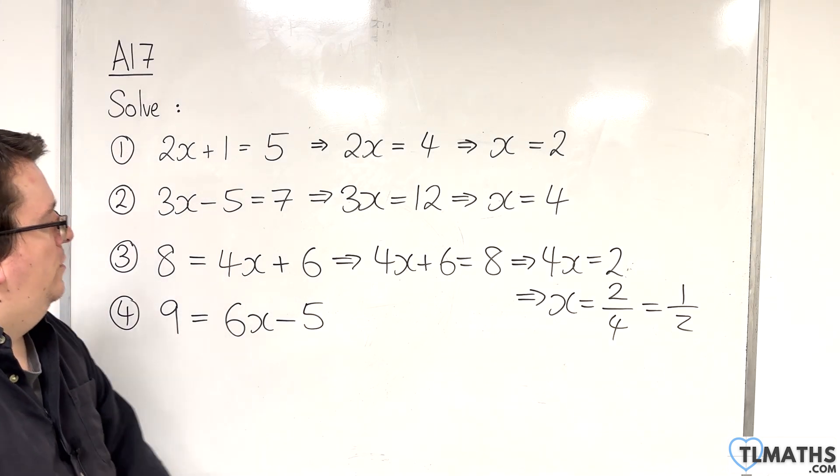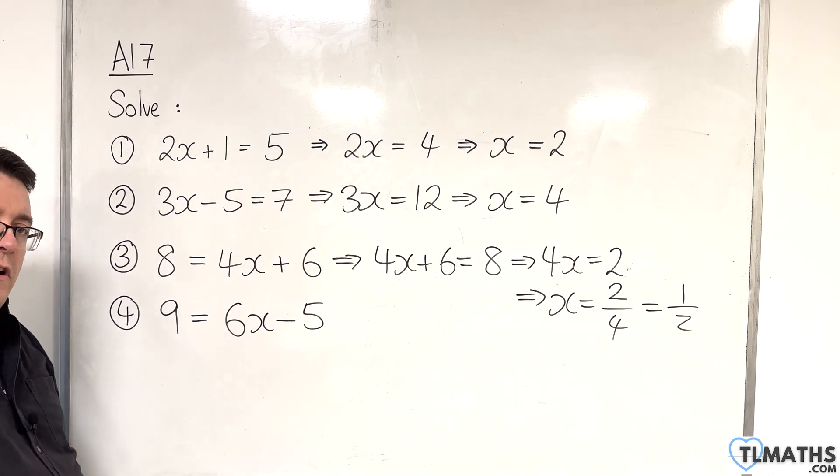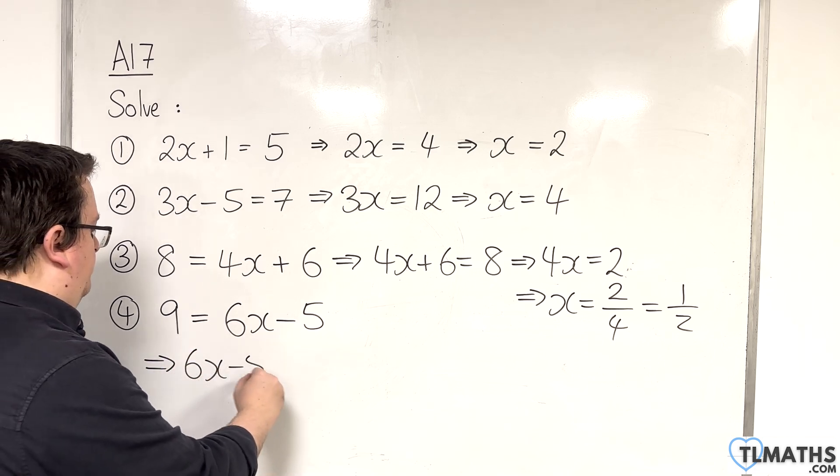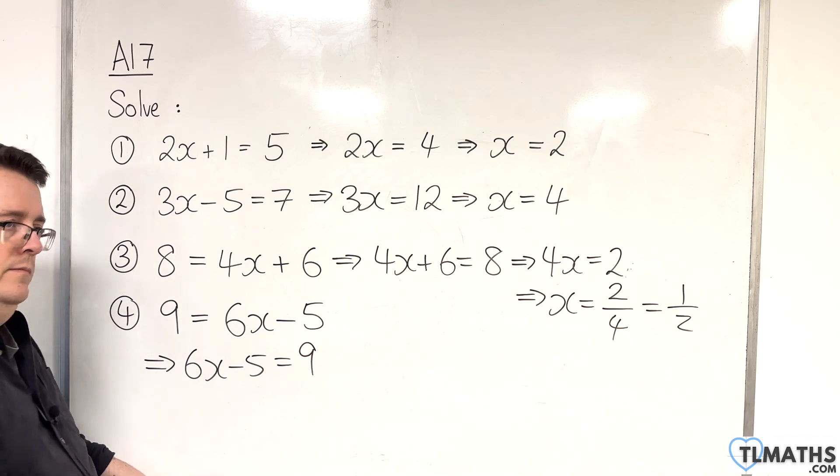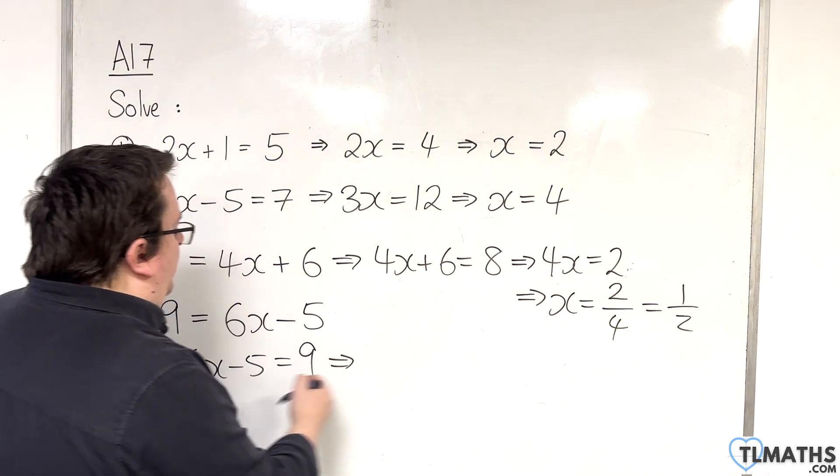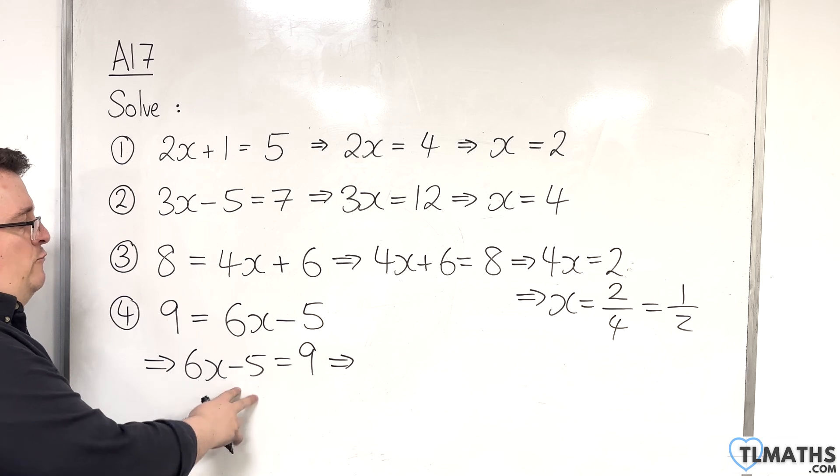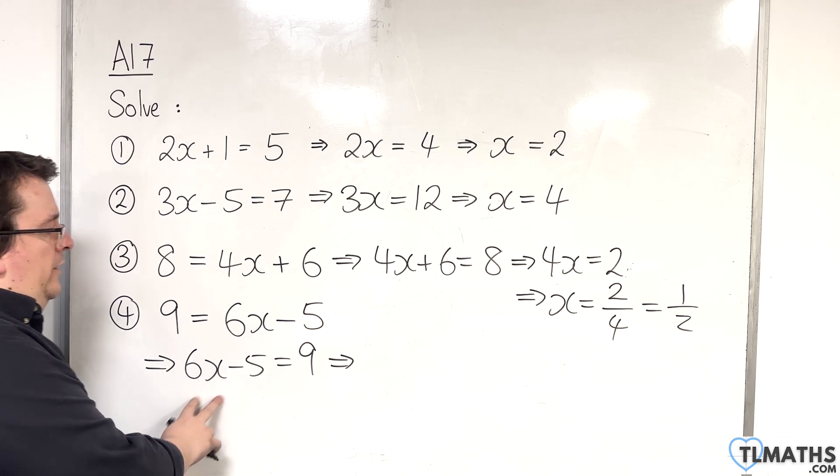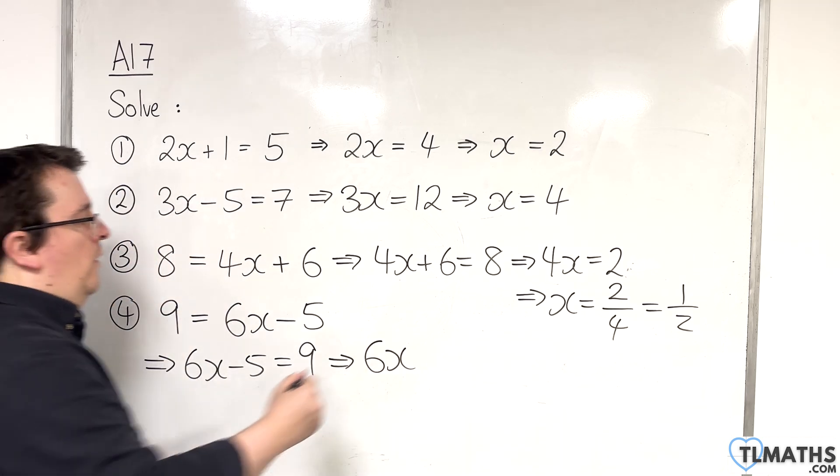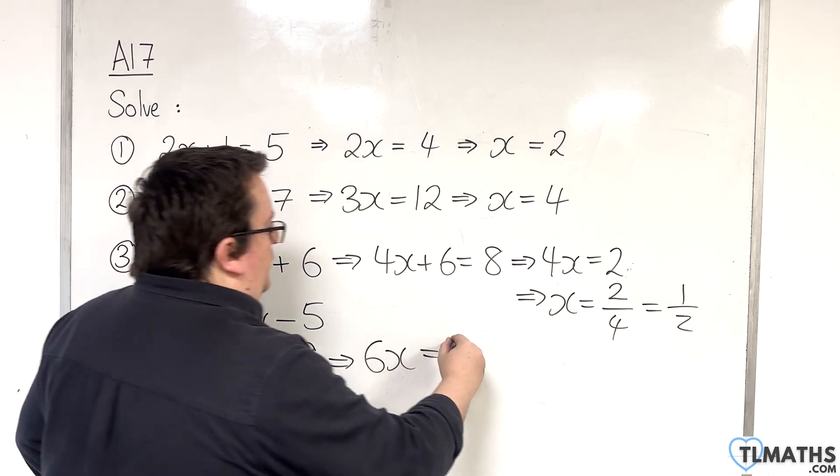Now, with number 4, 9 equals 6x take away 5. Again, we can reorder it right away. Okay, nothing wrong with doing that. We have this subtract 5. So, to get rid of that, I need to add 5 to both sides. So, 6x take away 5 becomes 6x when I add 5. 9 plus 5 is 14.